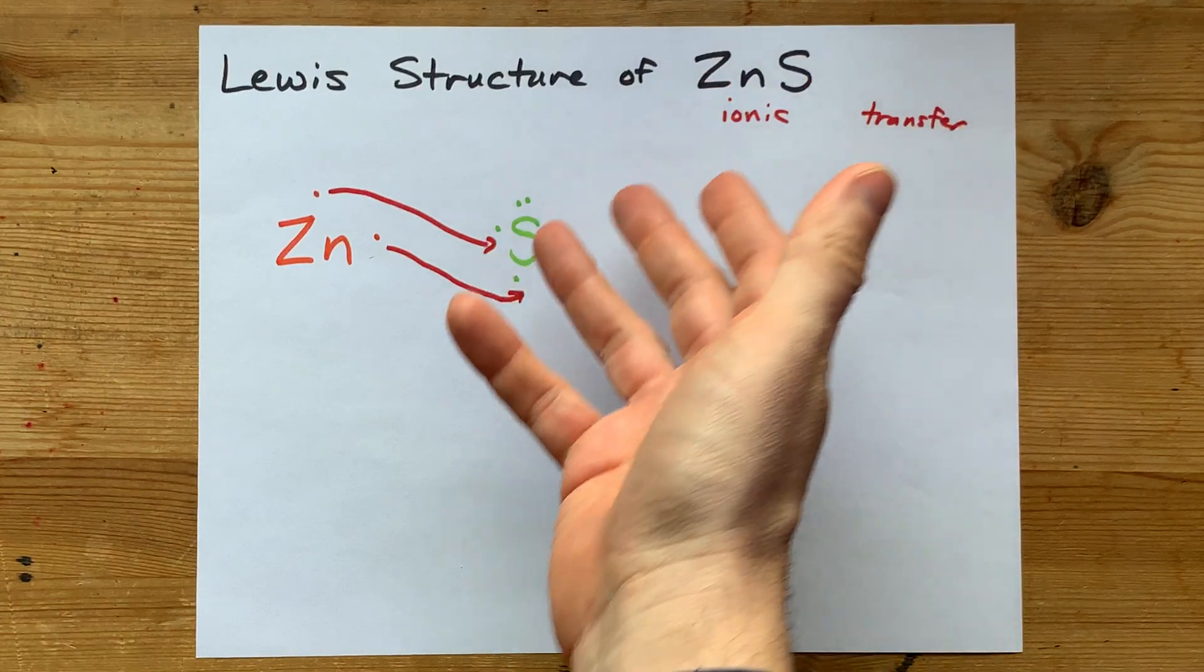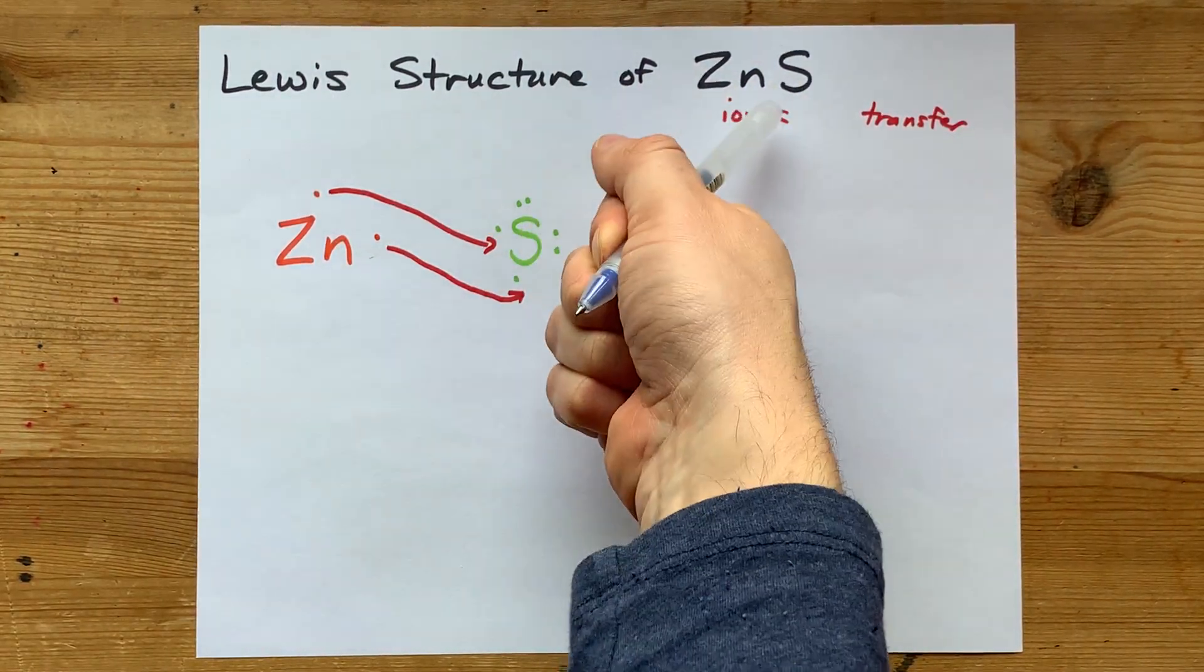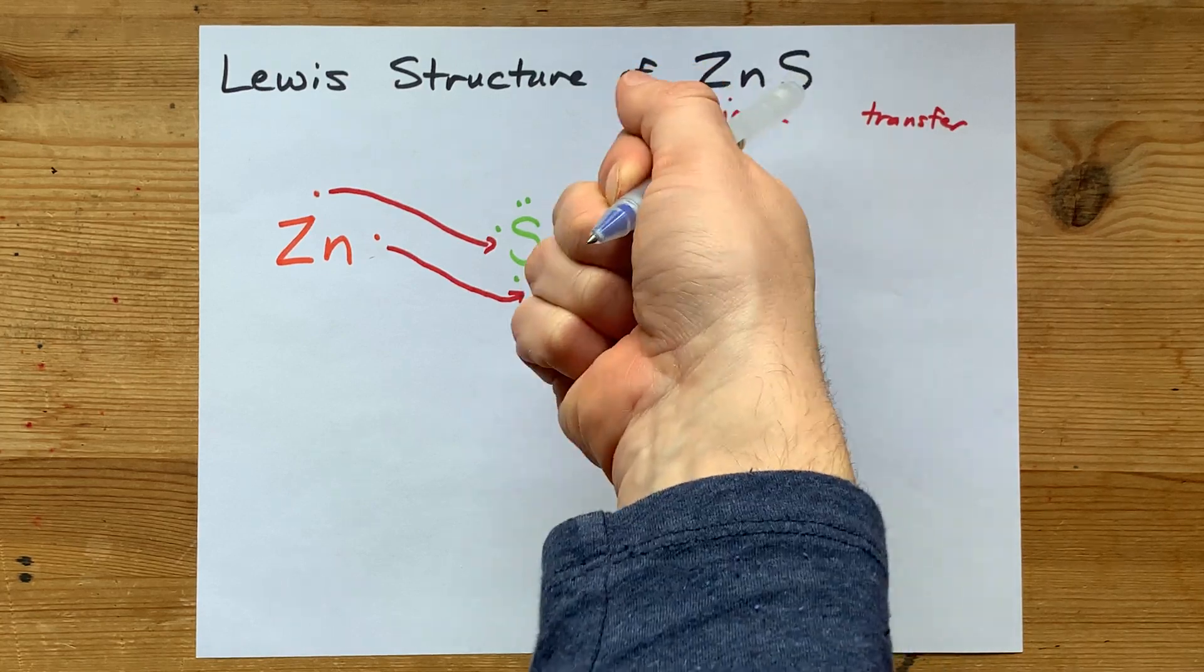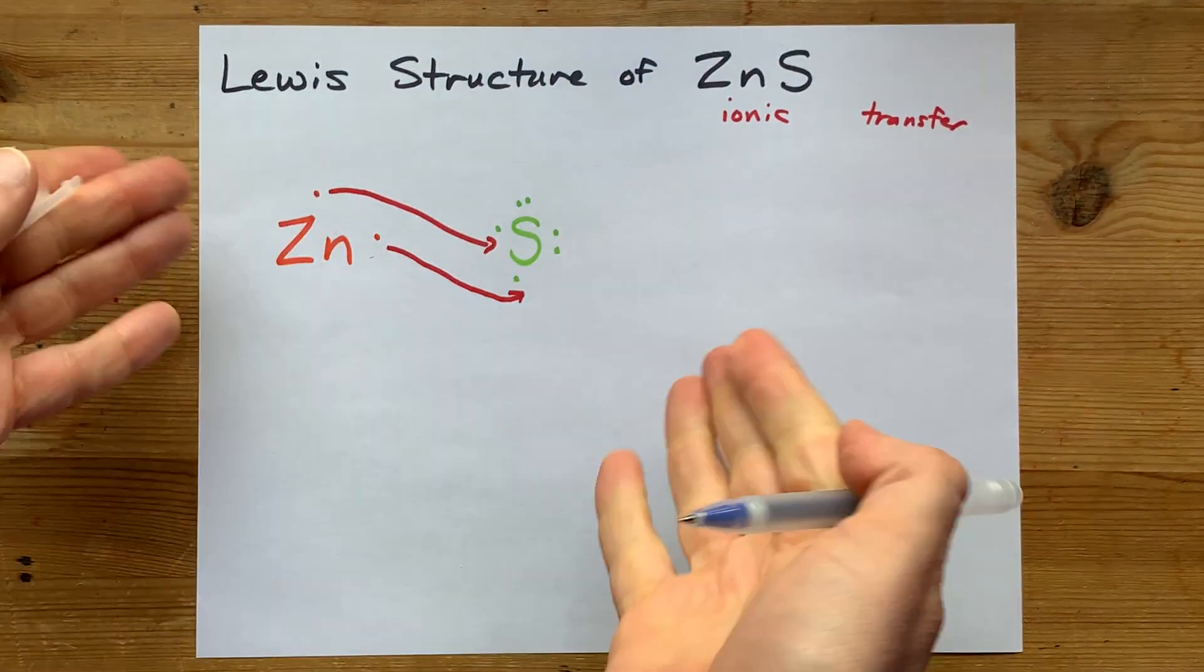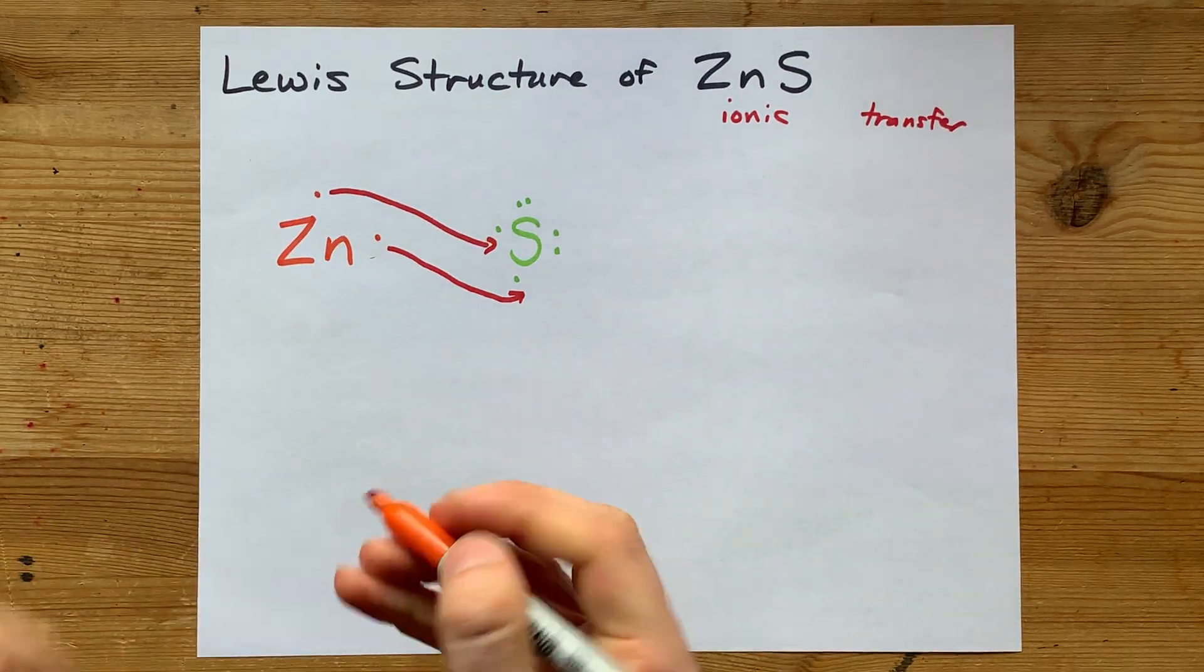But the formula here also gives that away. How many zincs are in this formula? Just one. And how many sulfurs are here? Also just one. You only need one of each. Done. I mean, not done. The Lewis structure needs to be drawn.